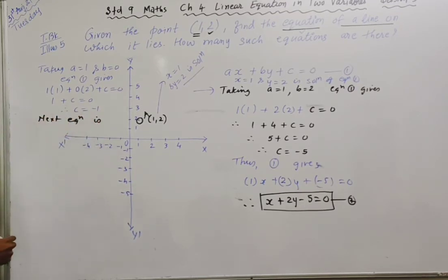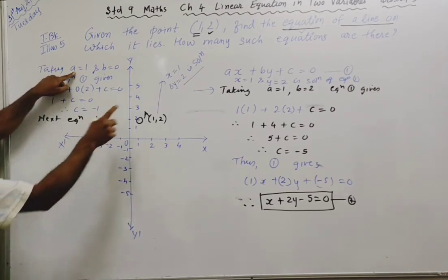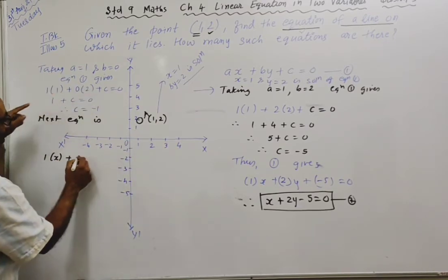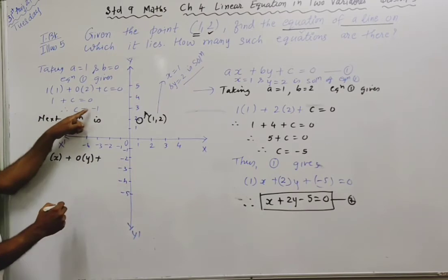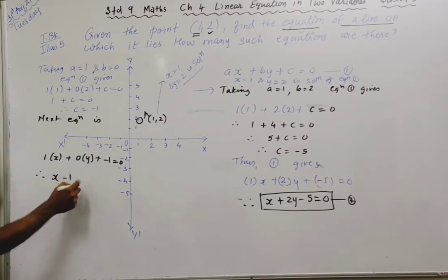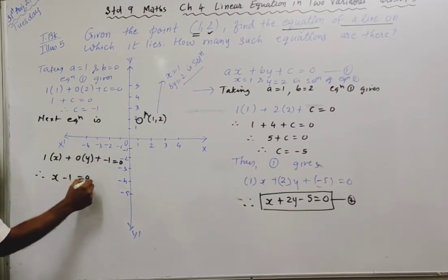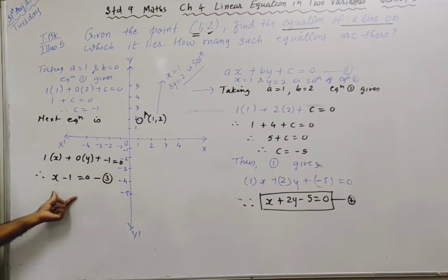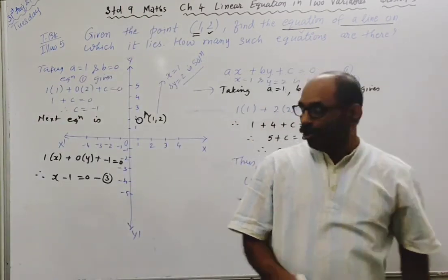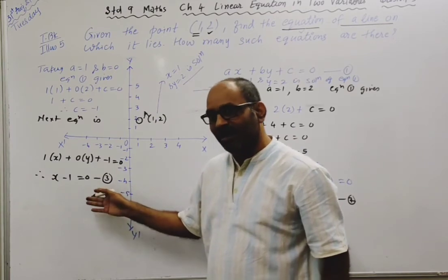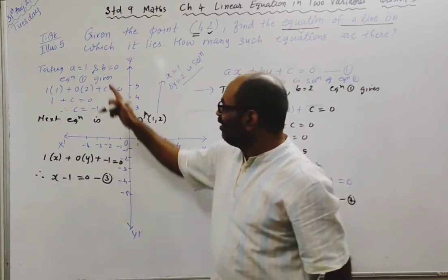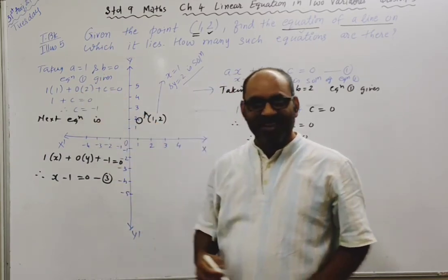The equation is: a value is 1, so 1·x plus b value is 0, so 0·y plus c value is -1 equals 0. So x - 1 = 0. This is your second equation. Sir, it's a linear equation in one variable. It's a linear equation in two variables as well. Why is missing? Because its coefficient is zero.